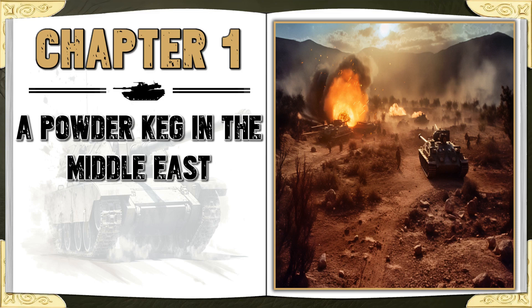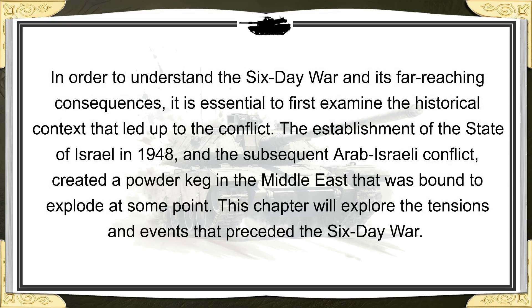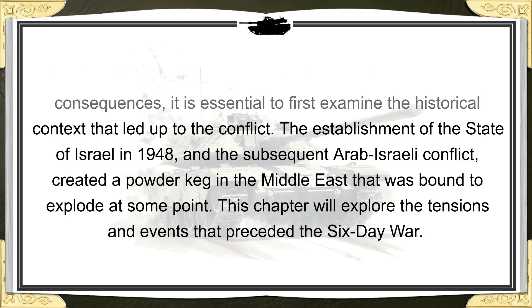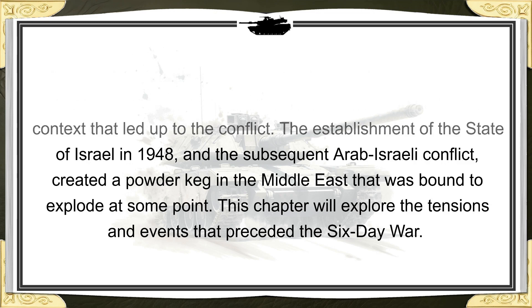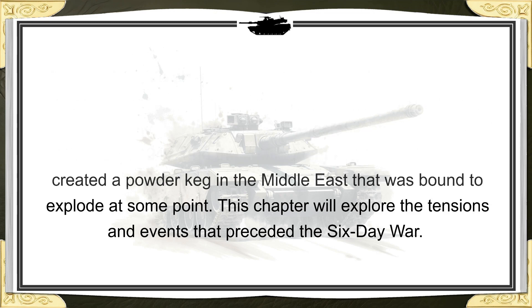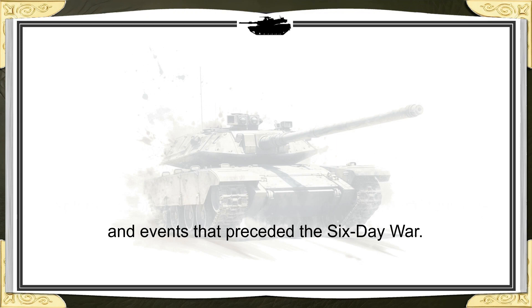Chapter 1: A Powder Keg in the Middle East. In order to understand the Six-Day War and its far-reaching consequences, it is essential to first examine the historical context that led up to the conflict. The establishment of the State of Israel in 1948 and the subsequent Arab-Israeli conflict created a powder keg in the Middle East that was bound to explode at some point.